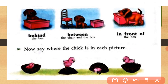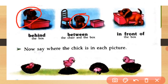Now, where is the dog in the first picture? The dog is behind the box — dog is behind the box. In the next picture, where is the dog? The dog is between the chair and the box. In the last picture, where is the dog? The dog is in front of the box — in front of the box, meaning box ke saamne.